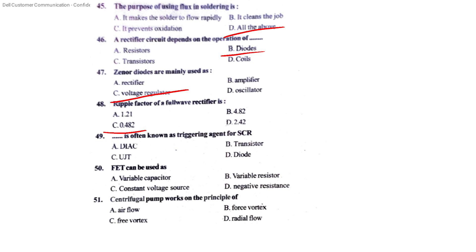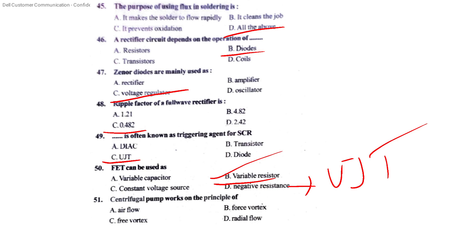The triggering agent of an SCR is UJT — Unijunction Transistor. FET can be used as a variable resistor.